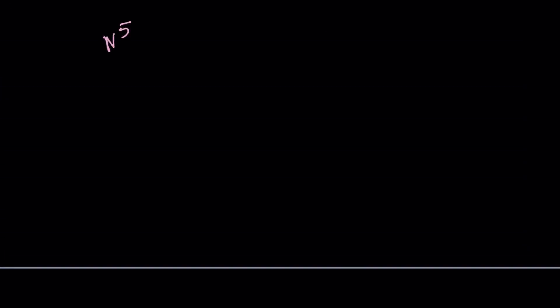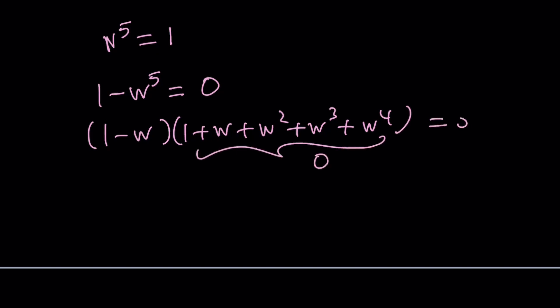You could also think of it this way. Well, we do know that w⁵ = 1. So 1 - w⁵, w⁵ is 0 because w is a 5th root of unity. But then you can factor this: (1 - w)(1 + w + w² + w³ + w⁴). And we know that w does not equal 1. So we can set this equal to 0. And that gives you the exact same thing, this sum being negative 1.